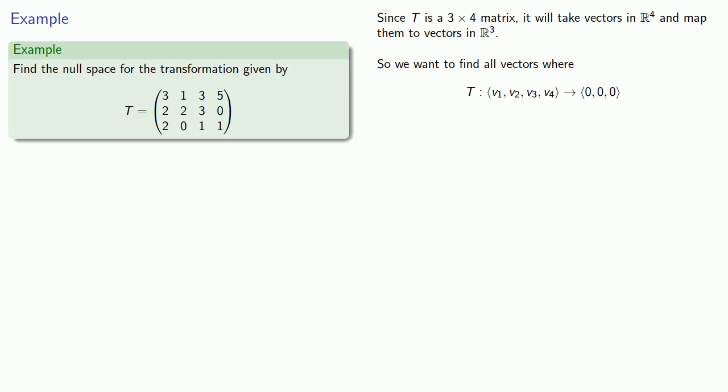I can read the coefficients of the transformation matrix as the formulas that tell me what those 3 components are going to be. That first row tells me that 3v₁ + 1v₂ + 3v₃ + 5v₄ is going to be my first component. Since I'm looking for the null space, I want that first component to be zero. Likewise, the second row tells me that 2v₁ + 2v₂ + 3v₃ + 0v₄ is going to be the second component, which I also want to be zero. Finally, the third row tells me that 2v₁ + 0v₂ + 1v₃ + 1v₄ gives me the third component, which again I want to be zero. Now I have this nice system of linear equations to solve.